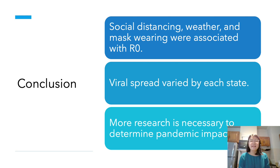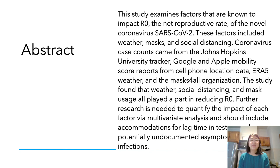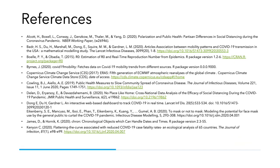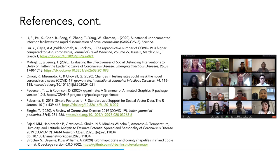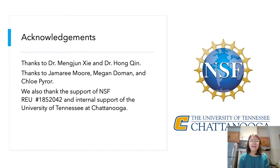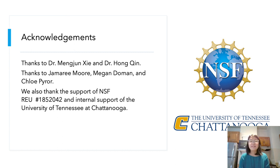In conclusion, social distancing, weather, and mask wearing were associated with R0, but this varied by state. This points to the fact that more research is necessary to determine the pandemic's impact and how widespread it is. Here is the abstract for this research project. With that, I'd like to thank Dr. Mengzheng Hsieh and Dr. Hongqin for being such amazing mentors this summer. I'd also like to thank my colleagues Jammarie Moore, Megan Doman, and Chloe Pryor, and lastly the NSF for providing the financial support to run this project.